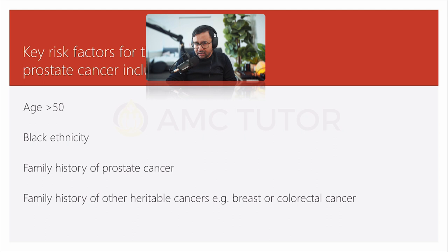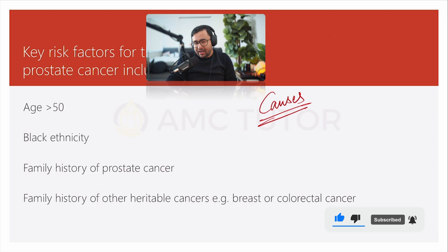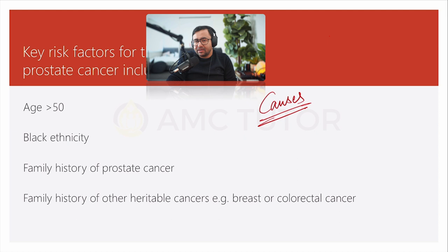After explaining the condition, explain the causes. Tell the patient that this tends to happen usually when people are older and is very common in Black ethnicity. If you've had a family history of prostate cancer or a history of other cancers running in the family, then you have a higher risk. If you have information from the case that links to a patient's specific risk factor, include that — for example, if the patient's father had prostate cancer, you can say: in your case, because your father had prostate cancer, it increased your risk. This is the connection between your knowledge and patient care.